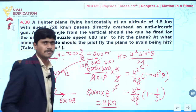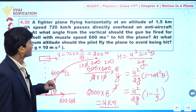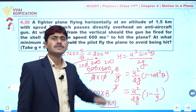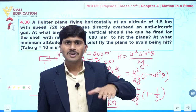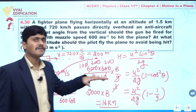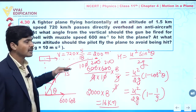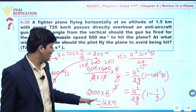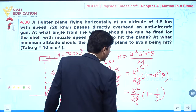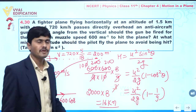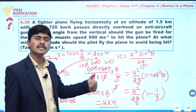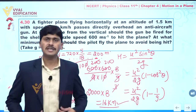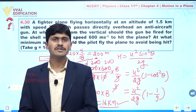This gives 16 kilometer. It means if the pilot flies the aircraft above 16 kilometer from the ground, the aircraft will definitely protect itself from this fire. So the first answer is cosθ equals 1/3, and the angle from vertical is 90 minus θ. The second answer is 16 kilometer.